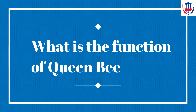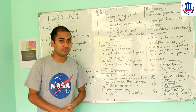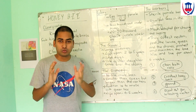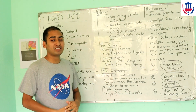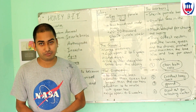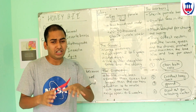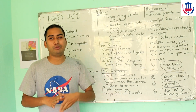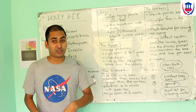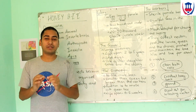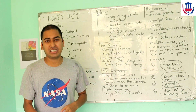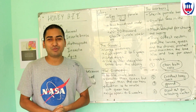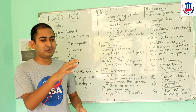Let's look at the queen bee. The queen bee is very important. The abdomen is very large. Her size is two to five times larger than other bees. The queen bee is responsible for laying eggs and takes the responsibility of leading the colony.